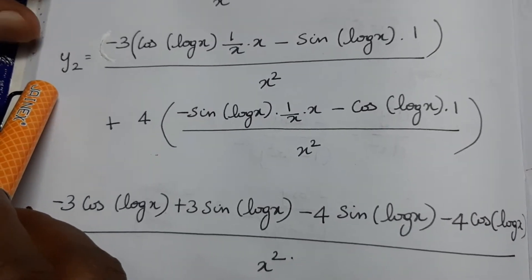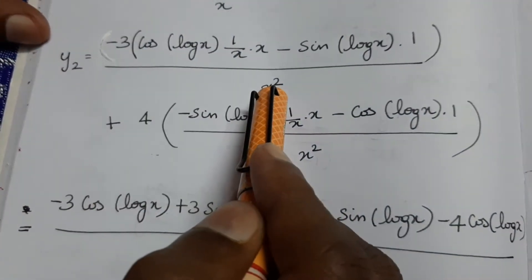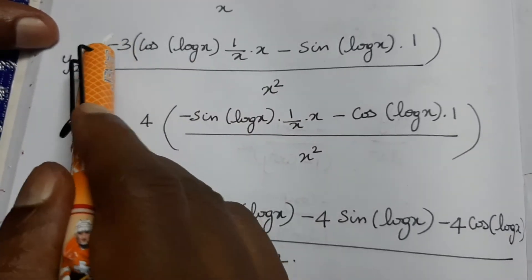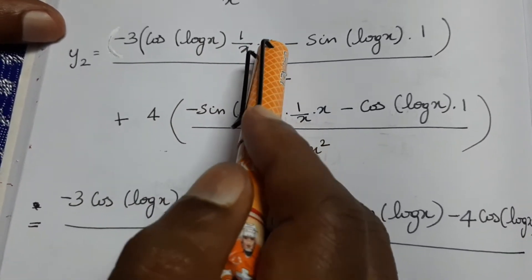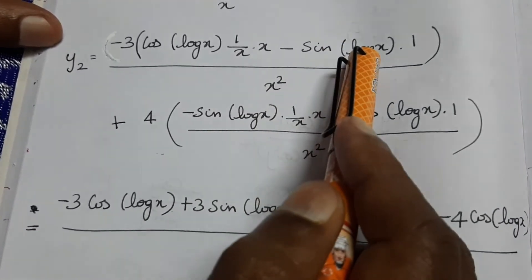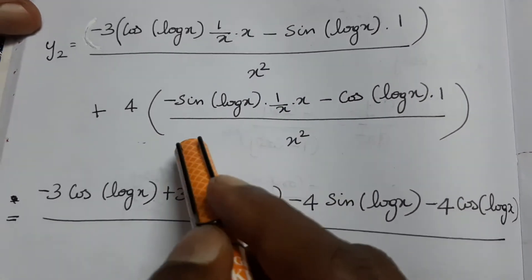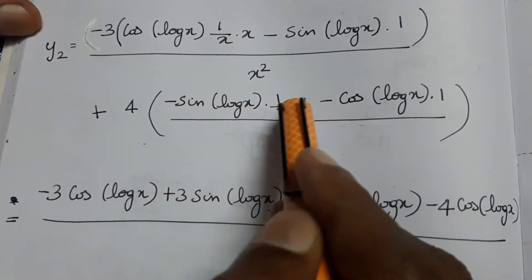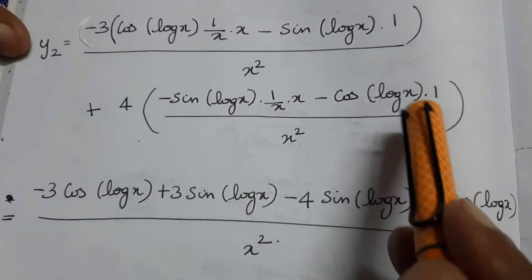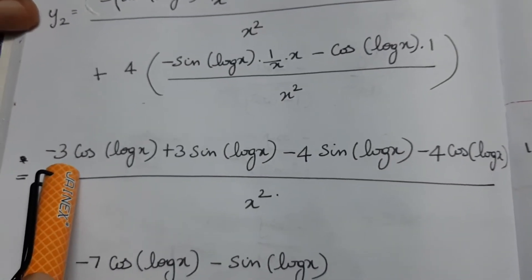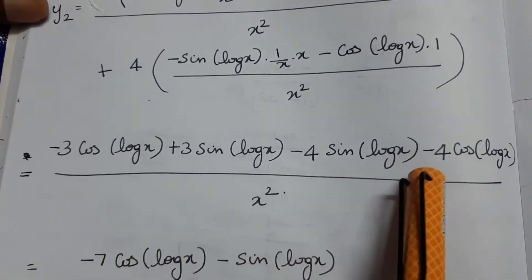Using the uv formula for the second derivative, y₂ equals d²y/dx², we differentiate y₁ equals minus 3 sin(log x) by x plus 4 cos(log x) by x. Applying the quotient formula gives minus 3 cos(log x) by x square minus 3 sin(log x) minus 4 sin(log x) minus 4 cos(log x), all divided by x square.